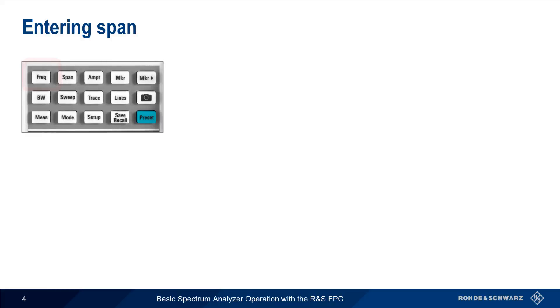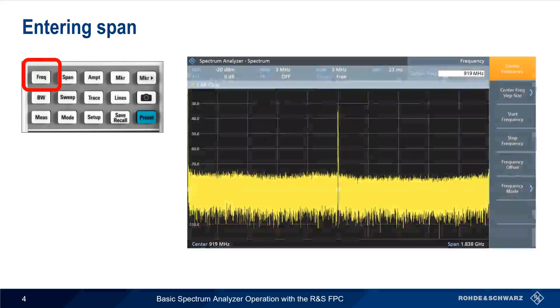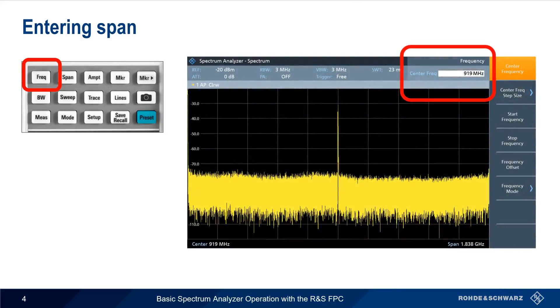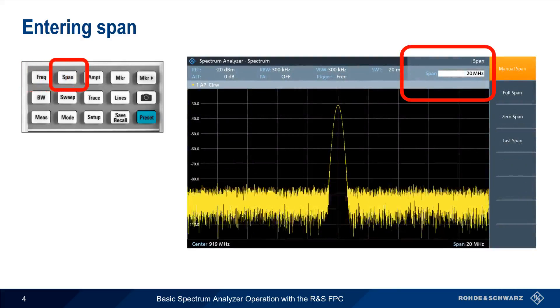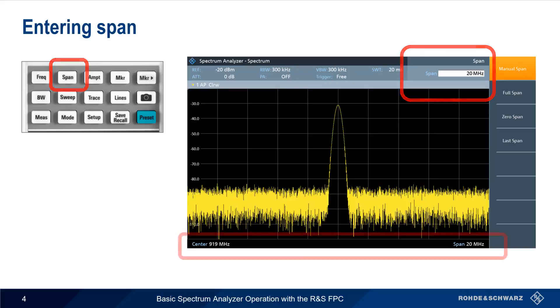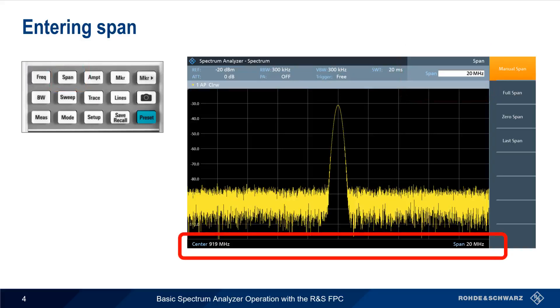The more common way to enter a frequency range is using center and span. We use the frequency hard key to enter our center frequency, in this case 919 MHz, and then use the span hard key to enter our span, here 20 MHz. As before, our center and span are displayed below the trace.